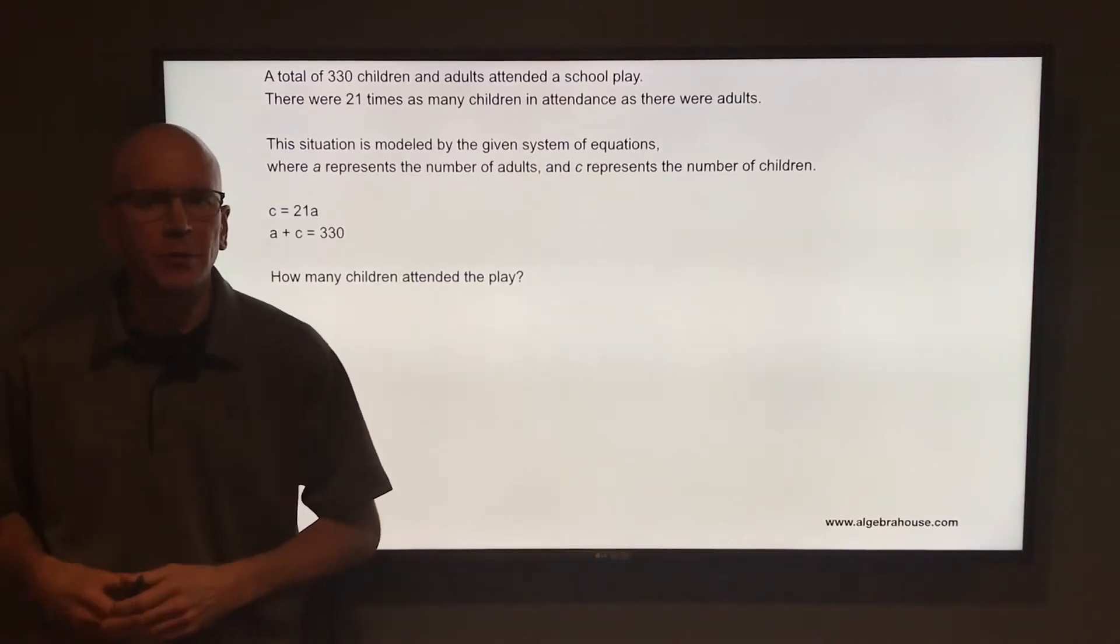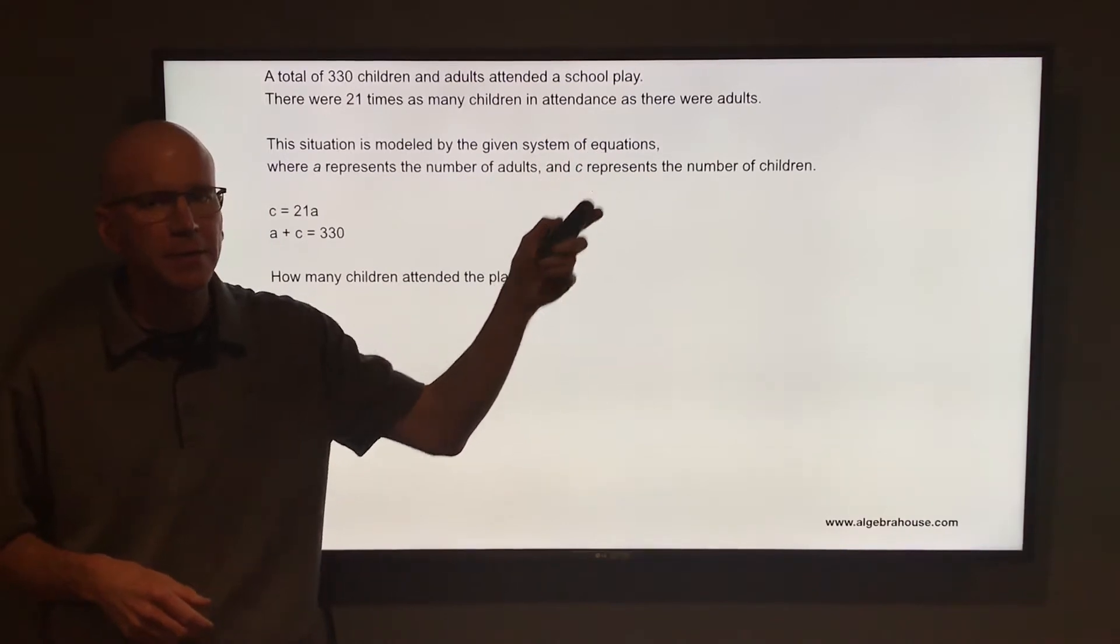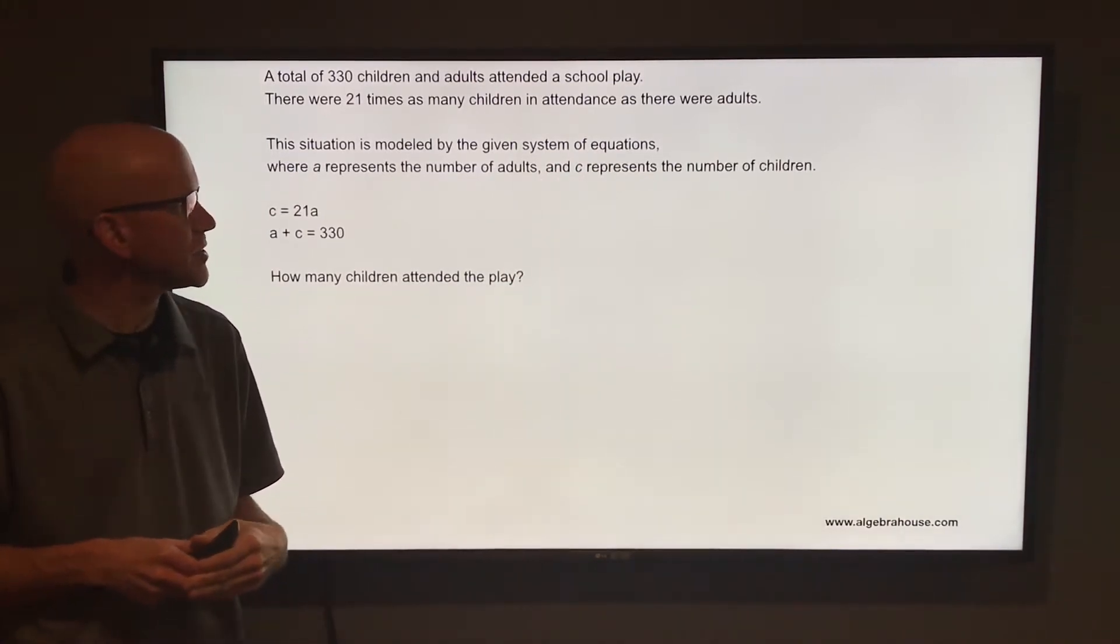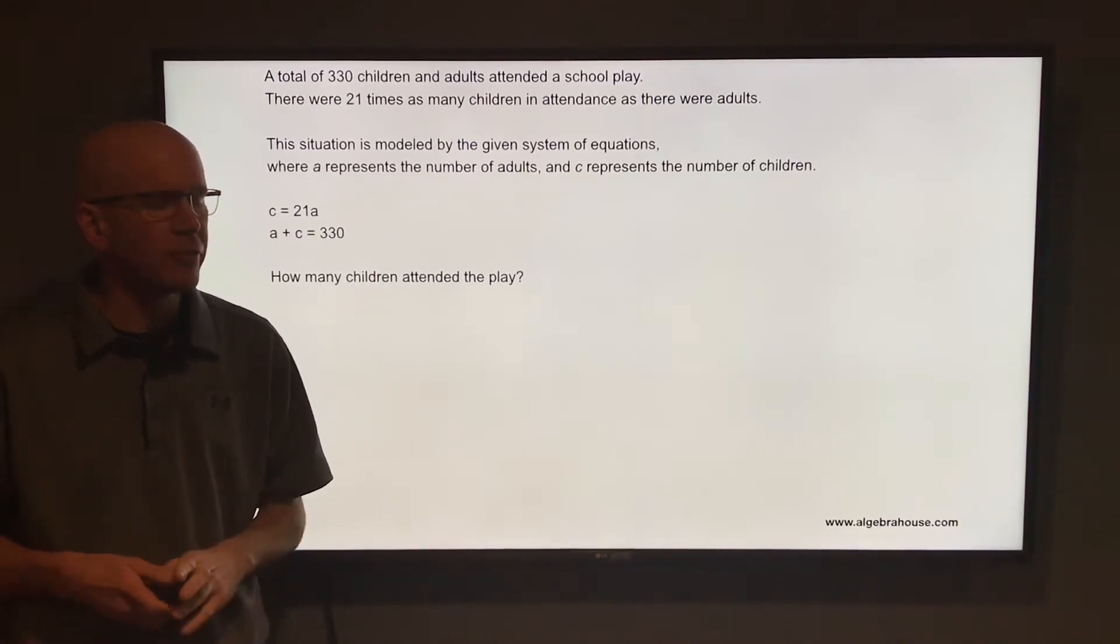A total of 330 children and adults attended a school play. There were 21 times as many children in attendance as there were adults. This situation is modeled by the given system of equations, where A represents the number of adults and C represents the number of children.